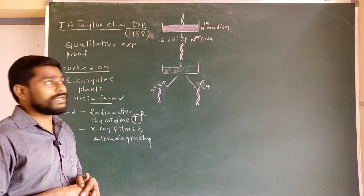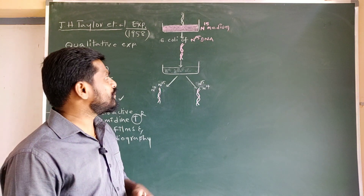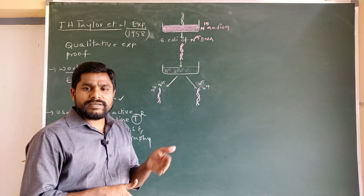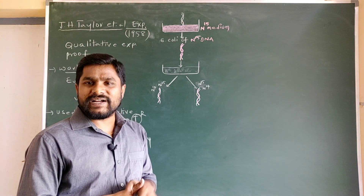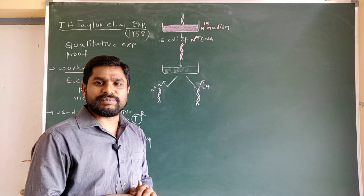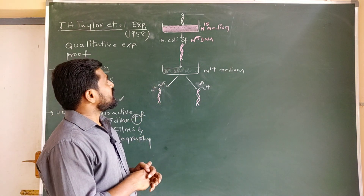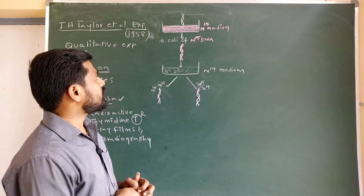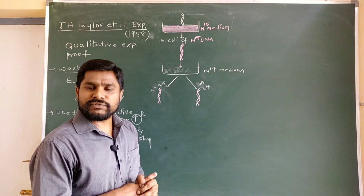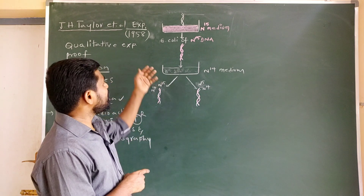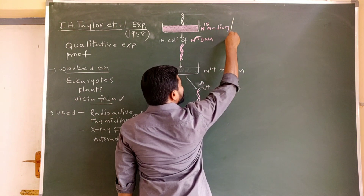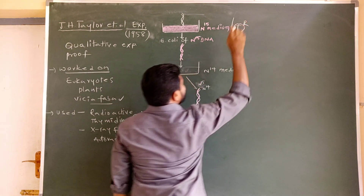The experimental procedure for J.H. Taylor's experiment is almost similar to the experimental procedure of Meselson and Stahl's experiment. Let me compare the two experimental procedures so you will come to know the similarities and differences between them. In Meselson and Stahl's experiment, first they prepared an N15 medium, and on this N15 medium they grew E. coli cells for several generations so that all the E. coli cells had N15 DNA. Likewise, J.H. Taylor also prepared a medium containing radioactive thymidine.